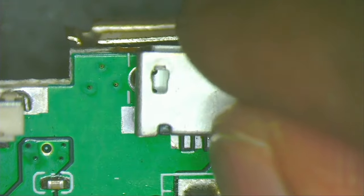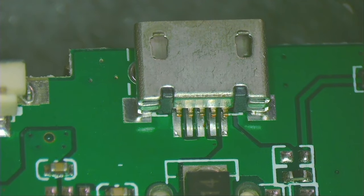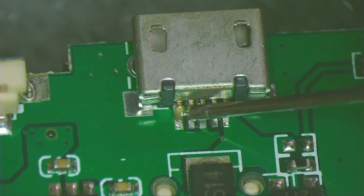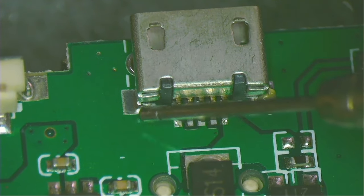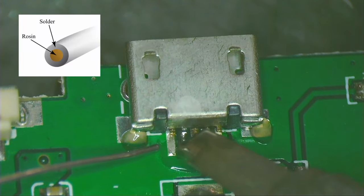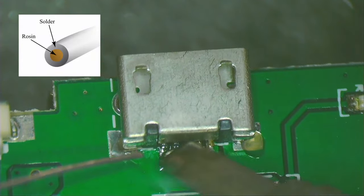Now I place the charging port, making sure it's centered and the pins are correctly aligned. I apply a little bit of flux on the pins and the places to be soldered. The solder I use also has a flux core. In the middle of the solder wire, there is flux.